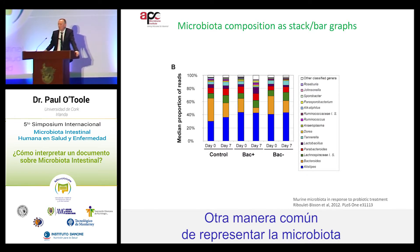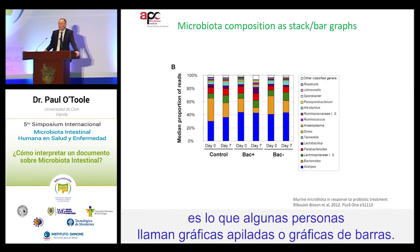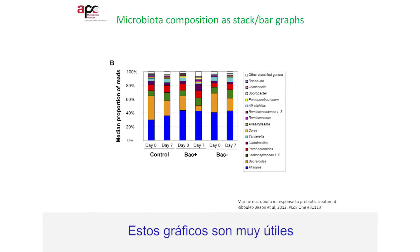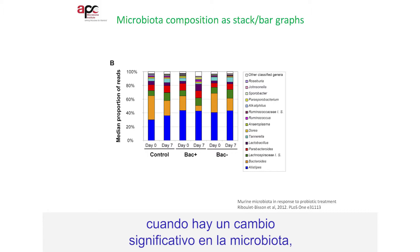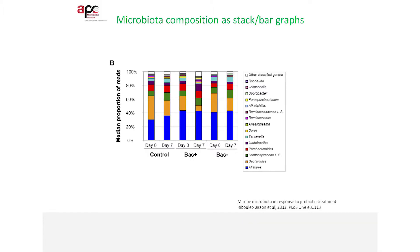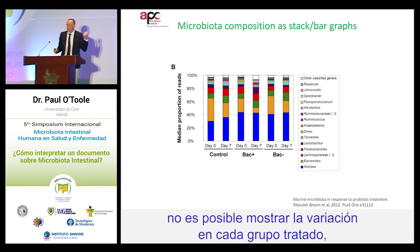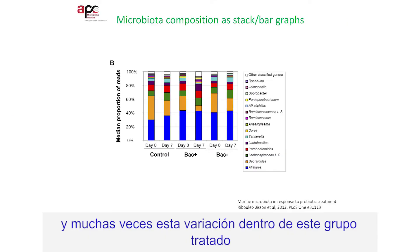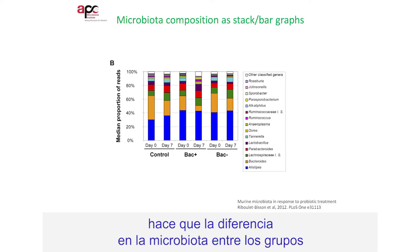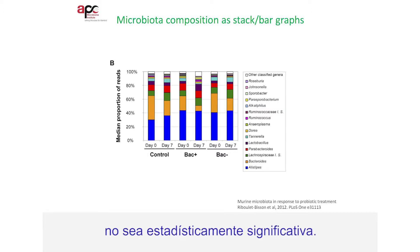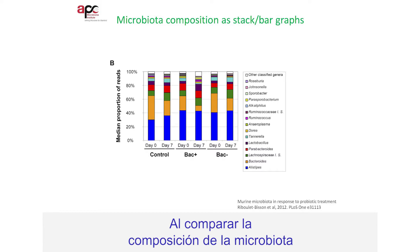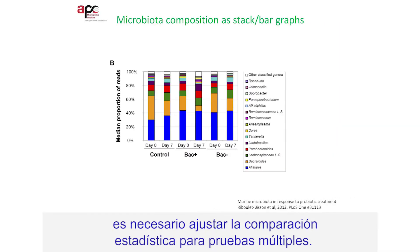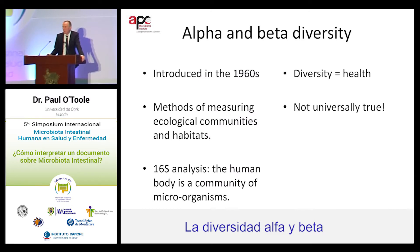Another common way to represent microbiota are what some people call stack graphs or bar graphs. These bar graphs are useful if there is a significant change in the microbiota. Using a bar graph method, it's not possible to show the variation within each treatment group, and sometimes the variation within each treatment group makes the difference in the microbiota between groups not statistically significant. When you compare microbiota composition before or after treatment, it's necessary to adjust your statistical comparison for multiple tests.